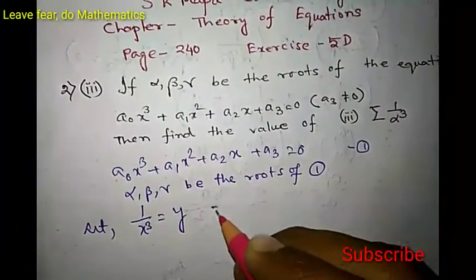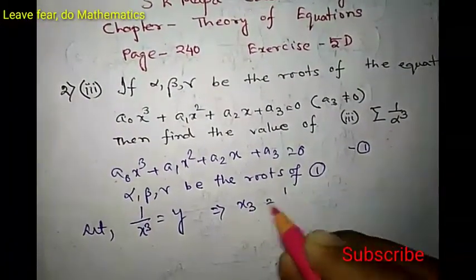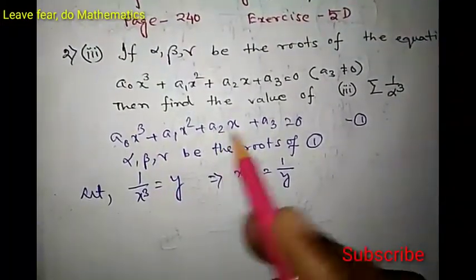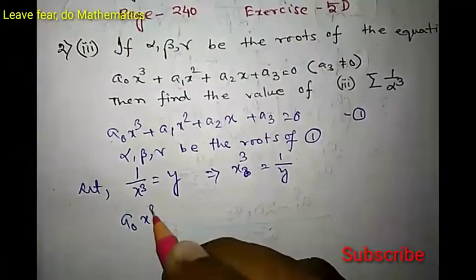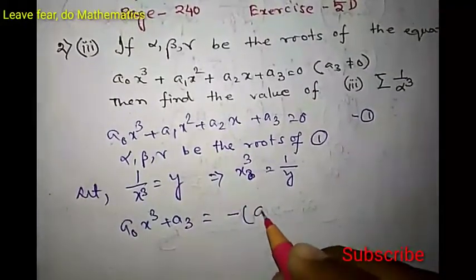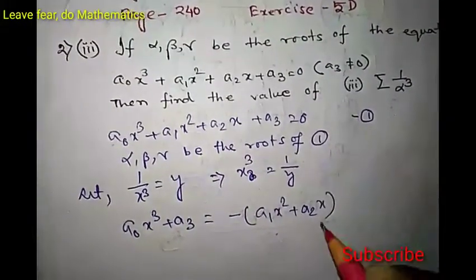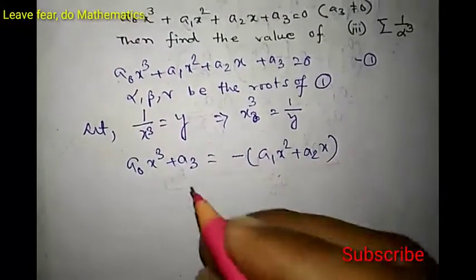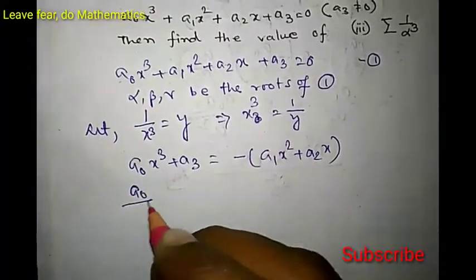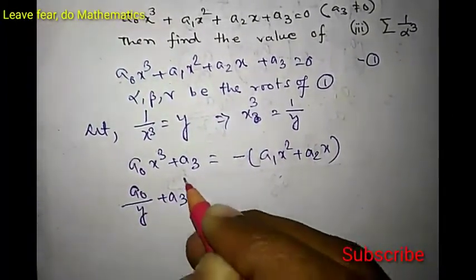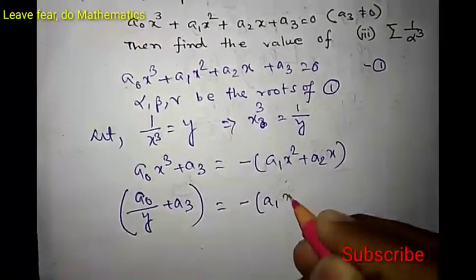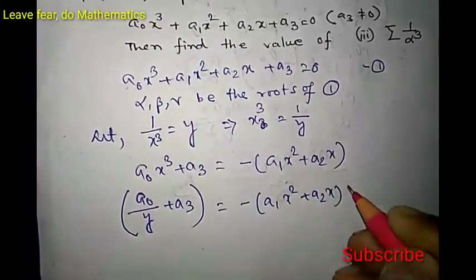Putting 1/x³ = y implies x³ = 1/y. From the original equation we get a₀x³ + a₃ = −(a₁x² + a₂x). Substituting x³ = 1/y, the left side becomes a₀/y + a₃, and this equals −(a₁x² + a₂x).